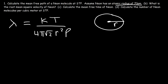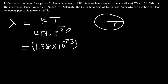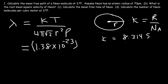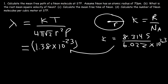We're given the atomic radius of neon — it's 70 picometers. The value of Boltzmann's constant is 1.38 times 10 to the negative 23. If you ever forget this number, you can calculate it by taking R and dividing it by Avogadro's number: 8.3145 divided by 6 times 10 to the 23, and that will give you that result.